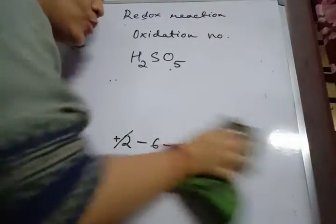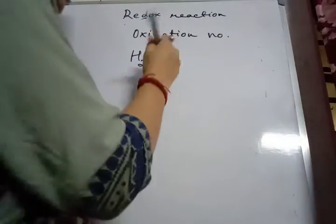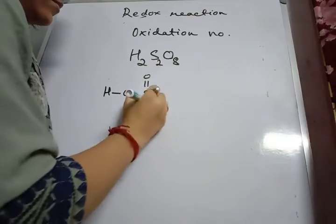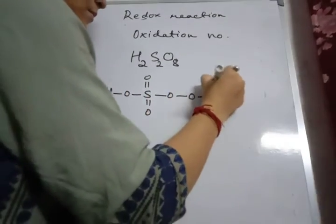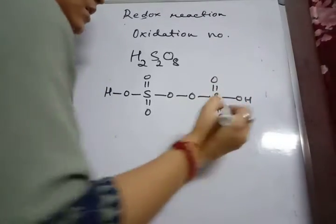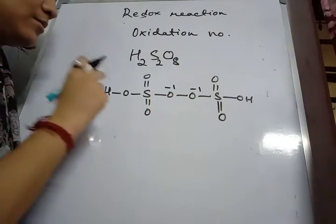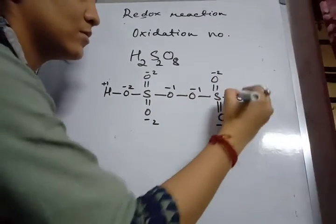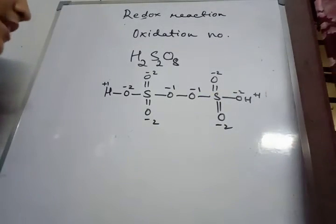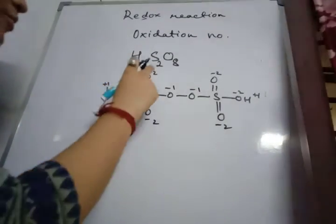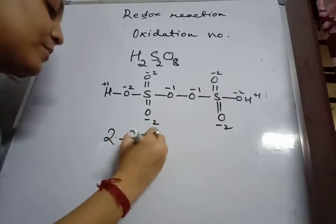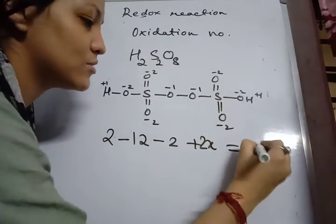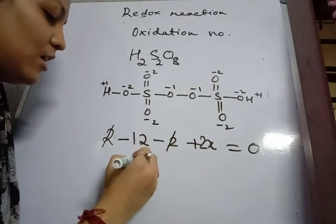The last exception is H2S2O8, which also has a peroxide linkage. Drawing its structure, we find one peroxide linkage. For hydrogen: plus two total; six oxide oxygens: minus twelve; one peroxide linkage: minus two; and two sulfur atoms: plus 2X — all equal to zero. The plus two and minus two cancel, so X equals plus six for each sulfur.